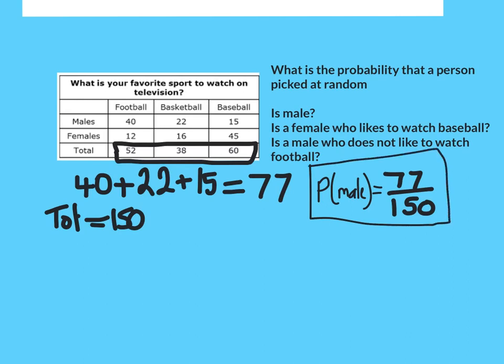What about probability it's a female who likes to watch baseball? So probability female and baseball. Female and baseball is this number here, so that's 45 out of 150. I could simplify that but I don't actually need to for probability, that is sufficient.